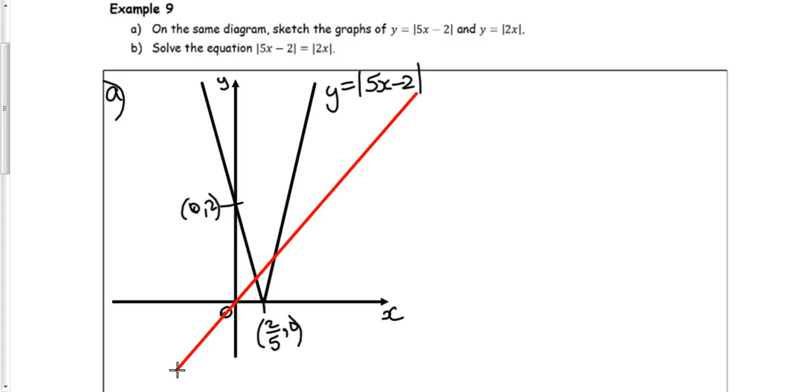And this graph will go through the origin. So without the mod signs, it would look something like that. With the mod signs, it will get to the origin. And then the y-values become negative, so they will be reflected. And we'll have a graph looking something like that. Let's just label that. This is y equals mod of 2x. So here it has a gradient of 2 compared to the other one, which has a gradient of 5.